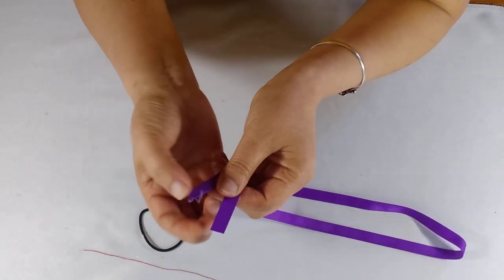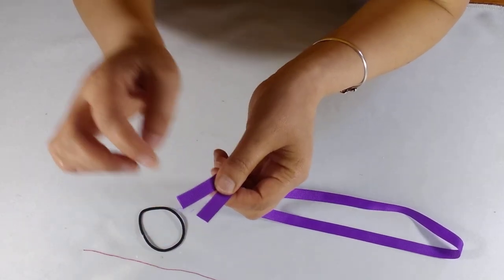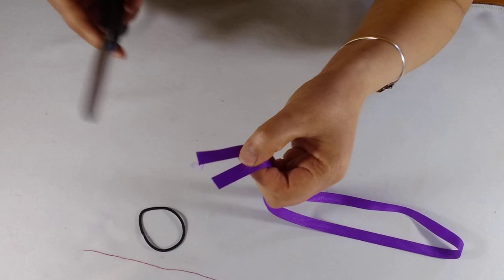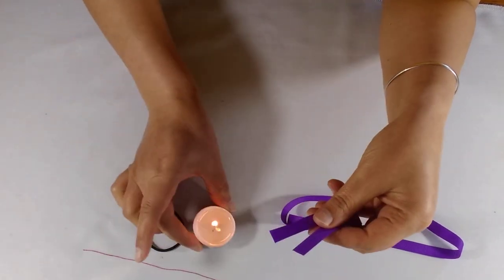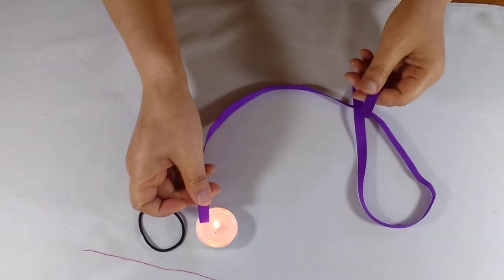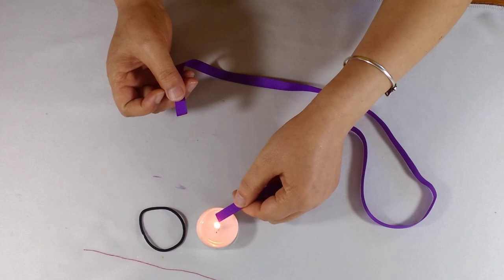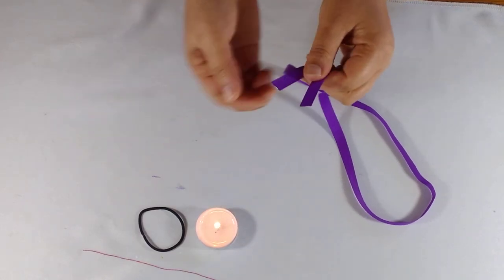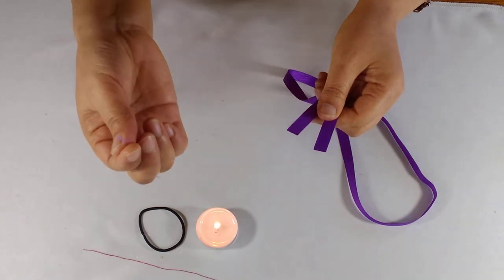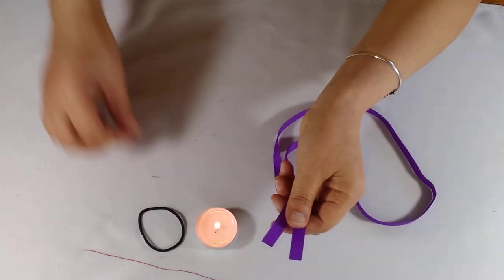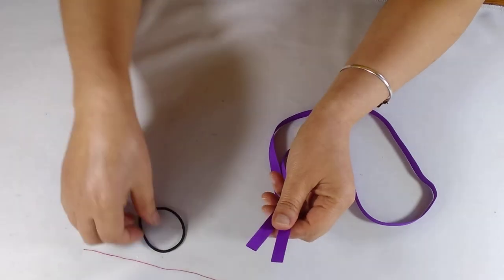Before we start, you need to seal this end. If you don't seal it, it will be loose like that, so you don't want it to become like that. All you need to do is pass it over the candle flame to seal it. Once you seal it, you can see there are no longer loose fluffy things.